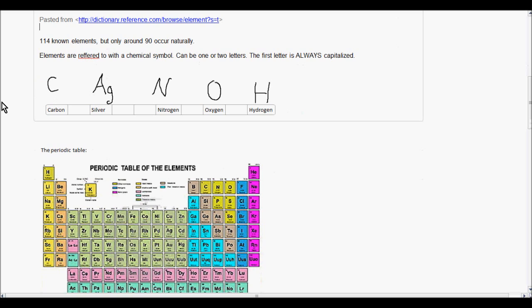There's 114 known elements in the periodic table. Only about 90 occur naturally. All the other ones are synthesized or come from nuclear stuff. Elements are referred to with a chemical symbol, which can be one or two letters, and it's important to remember that the first letter is always capitalized. I listed some really common ones here: carbon, silver, nitrogen, oxygen, hydrogen. The symbols for these elements come from both Latin and Greek terms. It's crazy, but that's how they name them. So there you go. You won't have to memorize all 114 elements. You'll pretty much have the periodic table for every exam.